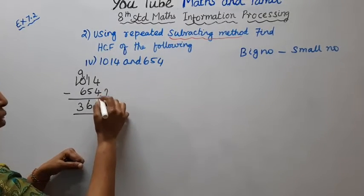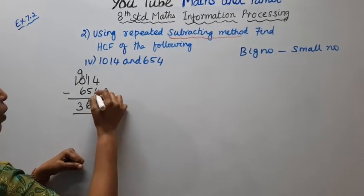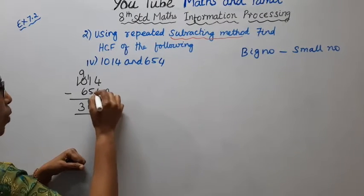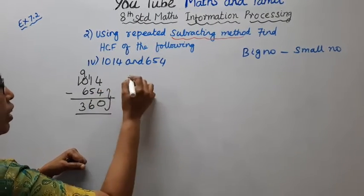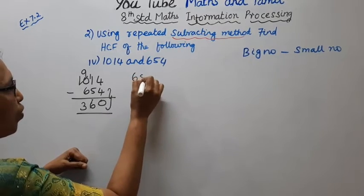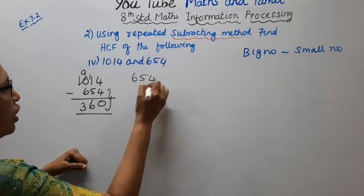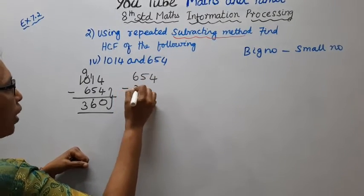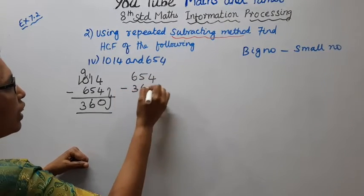Now, this is either end of the problem. The number is 654. Next step: 654 minus 360.